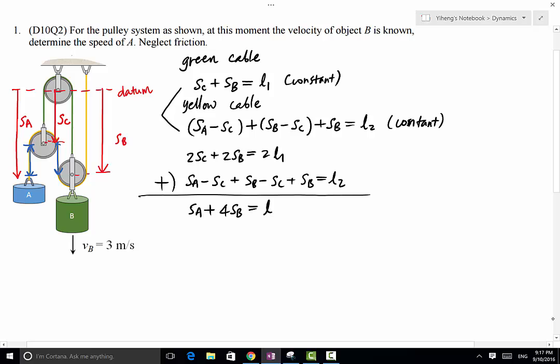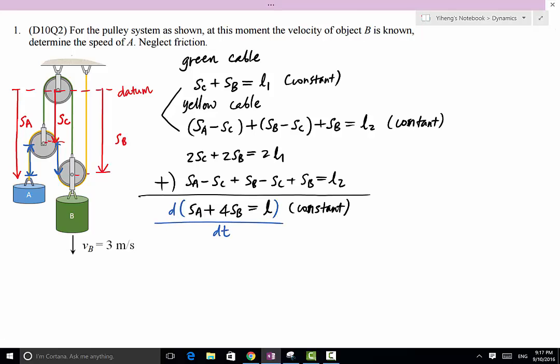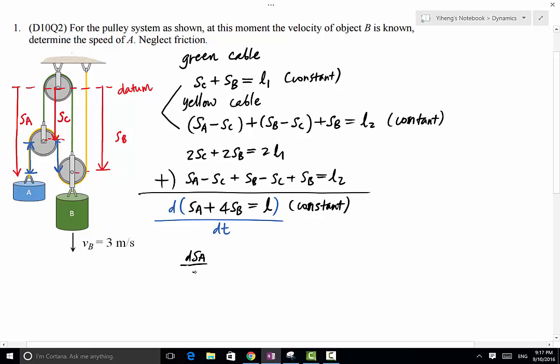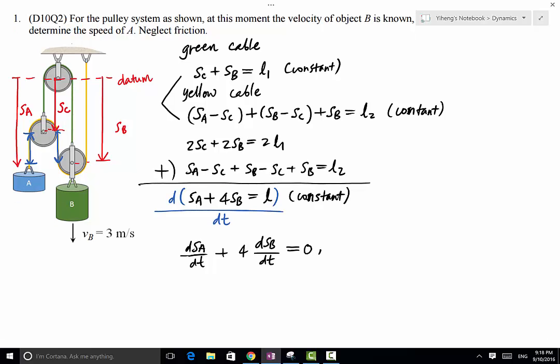I don't know what L is and I really do not care because all I need to know is L is a constant. Therefore, now if we take the time derivative of this entire equation, on the left-hand side we get dSA/dt plus 4 times dSB/dt equals to, on the right-hand side, simply 0. And we know that the time derivative of position is velocity. dSA/dt simply is VA, and dSB/dt simply is VB equals to 0.